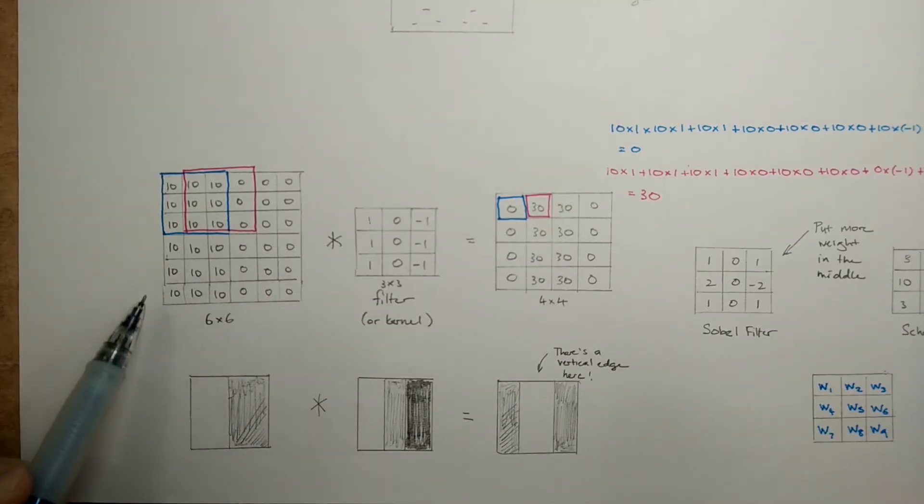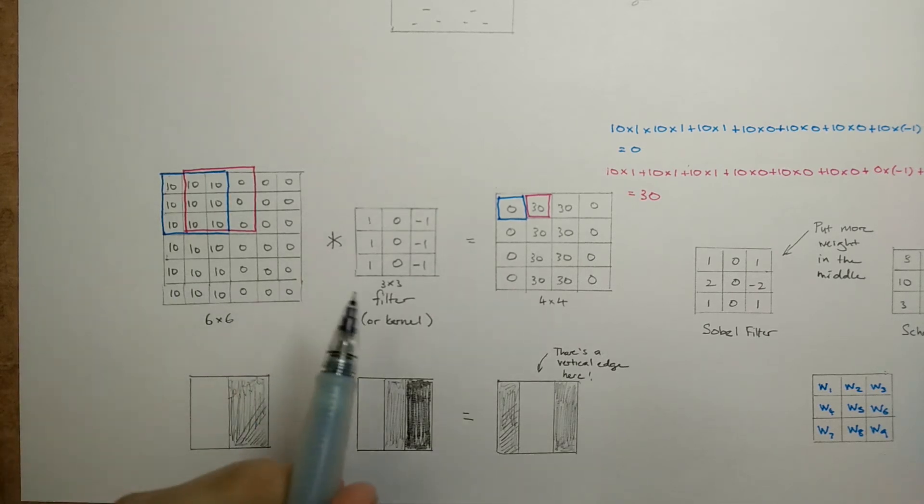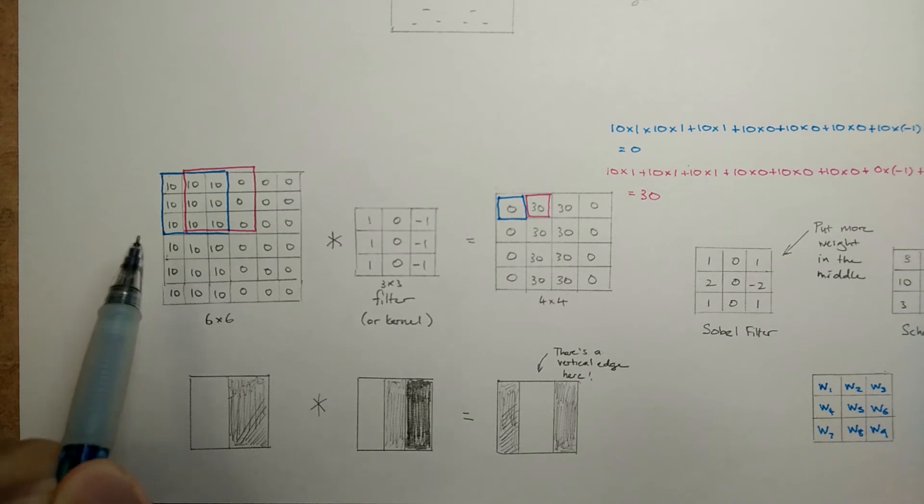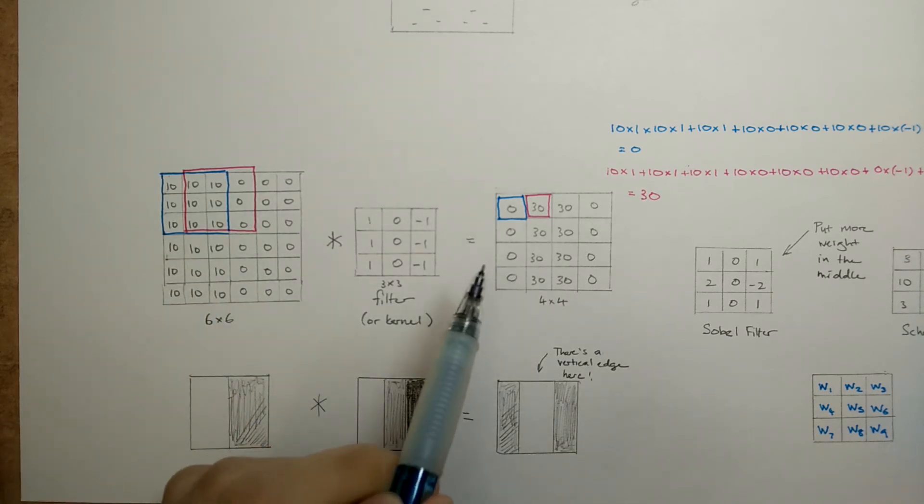The systematic way to go about doing this is using the convolution operation. By convolving a defined filter over the input image and recording the results, you can get an output image that tells you where the vertical edge is.